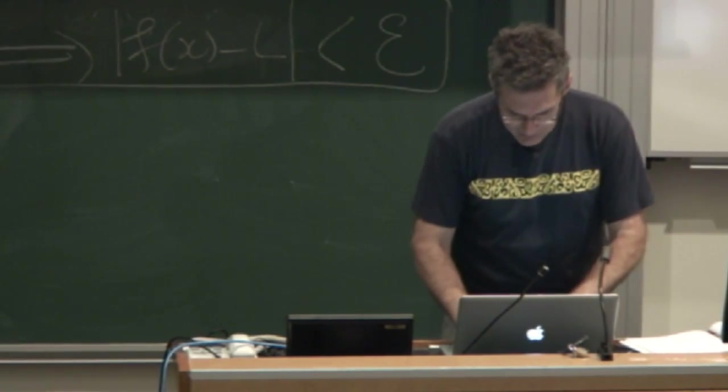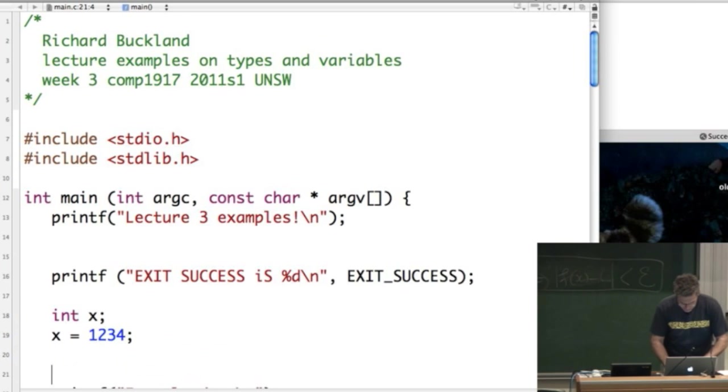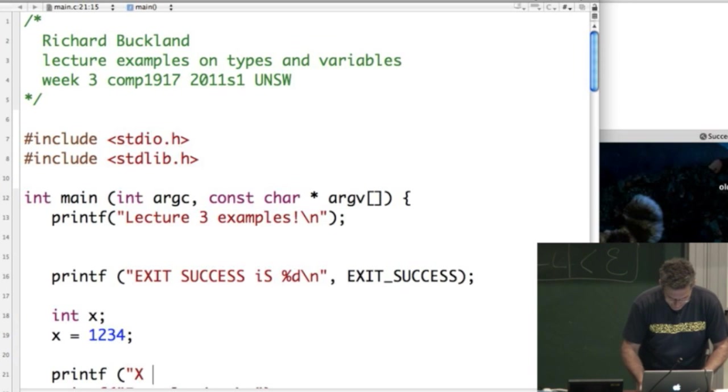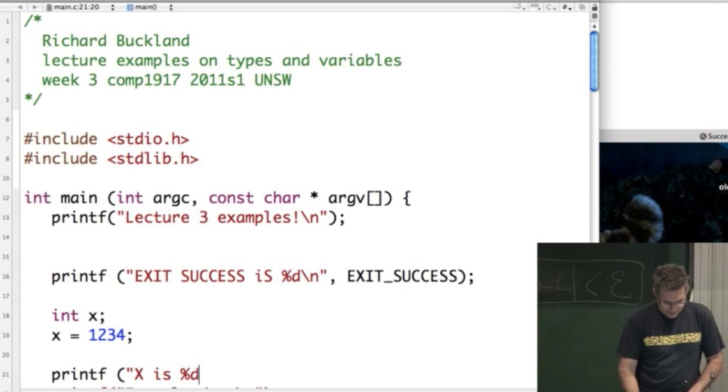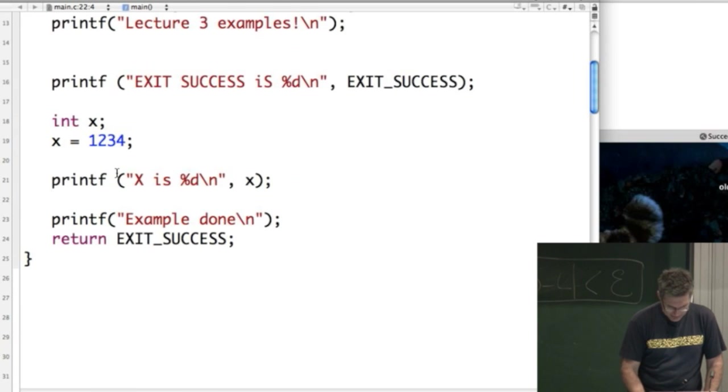So we're guessing that's setting about 4 bytes of memory aside to store a number. All right, let's just do some storing. X equals 1, 2, 3, 4. Printf. X is percent d. That means the value I'm about to give you, print it out as a whole number. So print it out, essentially, as an int. Okay, so hopefully there's no surprises here. What's going to happen?